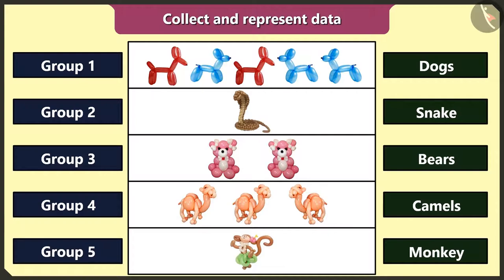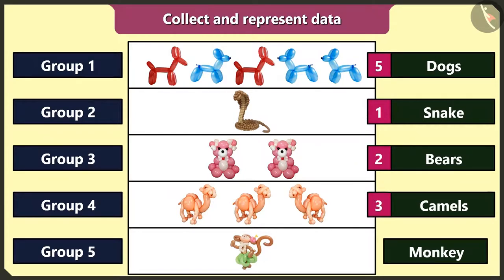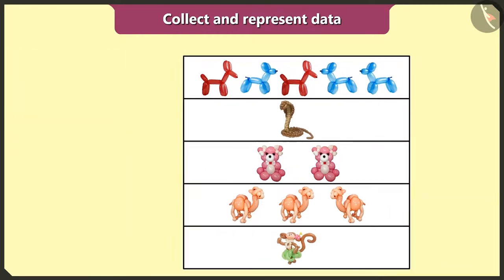Now I will count the animals in each group. There are five dog shaped balloons in the first group, one snake shaped balloon in the second group, two bear shaped balloons in the third group, three camel shaped balloons in the fourth group, and one monkey shaped balloon in the fifth group.